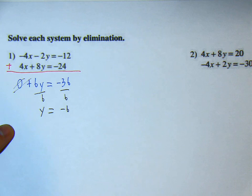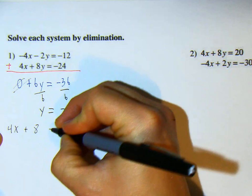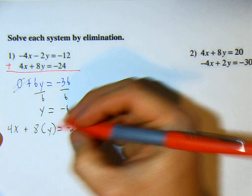And now we just need to pick one of the equations. Why don't we pick 4x plus 8 times y is equal to negative 24. And instead of y, we're going to substitute negative 6 in.